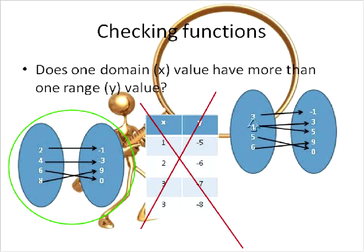Let's look at this one here. Three has a value of negative one. Four has a value of three and of five. So we know that this one domain value has more than one range value. And therefore, that is also not a function.